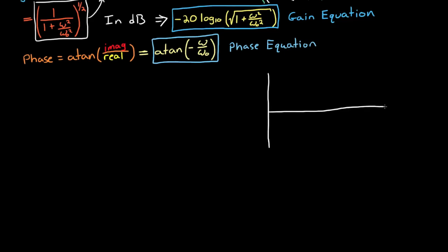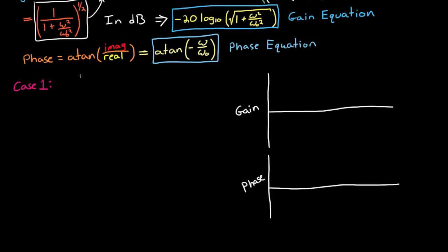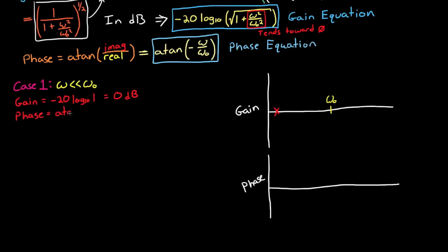We can estimate what these graphs look like by hand by examining three cases individually. In the first case, when ω is much less than the break frequency ω₀, ω²/ω₀² tends toward 0, leaving the square root of 1. The gain equation simplifies to −20 log₁₀(1), which is 0 dB, and we mark that on the gain plot. The phase is the arctangent of 0, which is also 0 degrees, and we mark that on the phase plot.